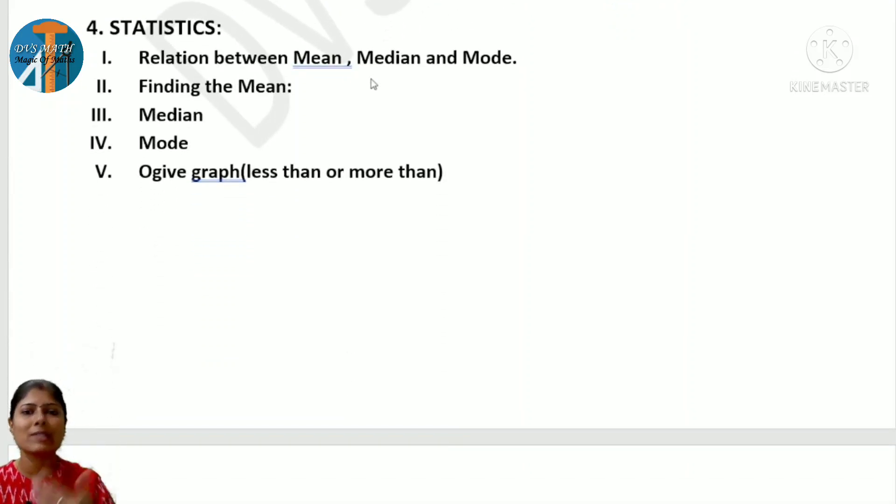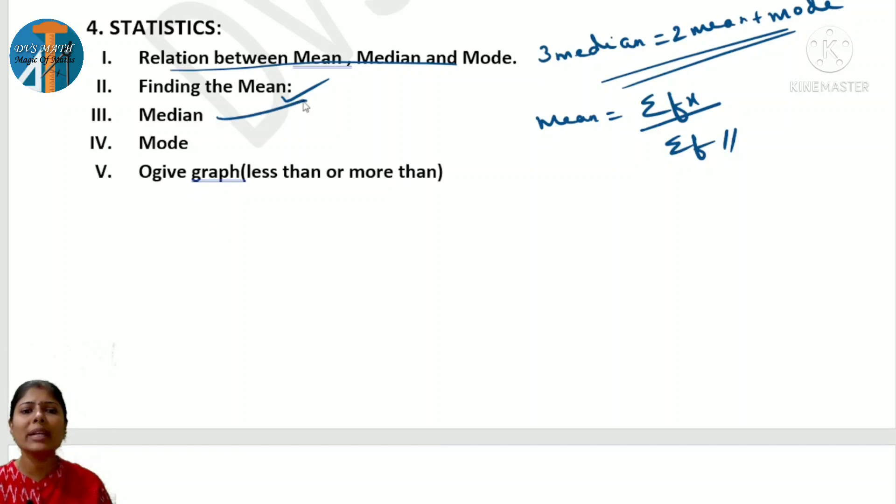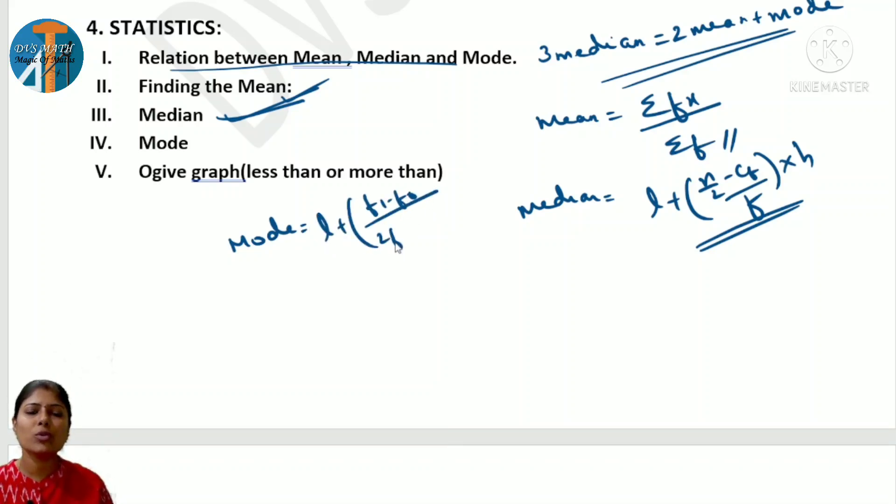Statistics related also they explained. I will upload in upcoming sessions. First one, relation between mean, median, mode - what is it? You know the relation: 3 median = 2 mean + 1 mode, or mode can be found from this. This is the relationship. Next, finding mean - mean formula you all know: Σfx/Σf. Median formula is l + [(n/2 - c)/f]×h. Use this formula for median. Mode formula is l + [(f1-f0)/(2f1-f0-f2)]×h. Use these formulas to solve mean, median, mode. After completing the 25 days plan chapters, try these lessons and post answers to me.